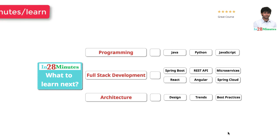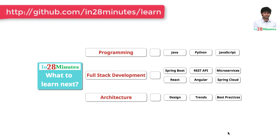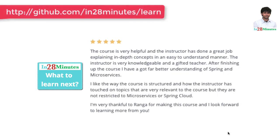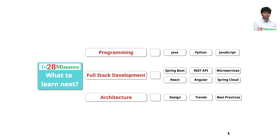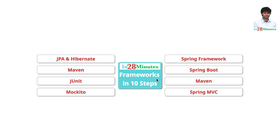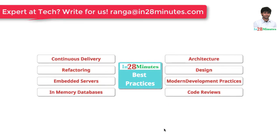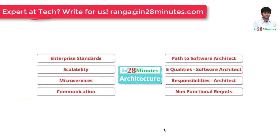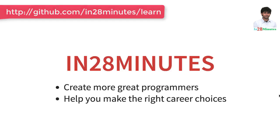You can learn programming with our awesome courses on Java, Python and JavaScript. You can learn full stack development with REST APIs and microservices with a wide range of frameworks like Spring Boot, Node.js, React, Angular and Spring Cloud. We have 200 plus videos to help you start your journey from a programmer to a software architect — videos to help you learn frameworks, industry trends including microservices, and best practices in architecture, design and code quality. Thanks for watching. Keep learning in 28 minutes.